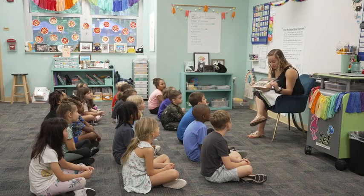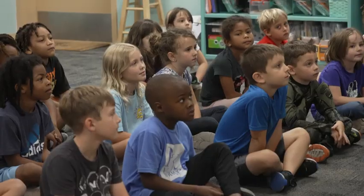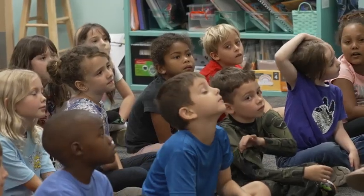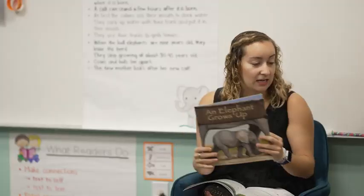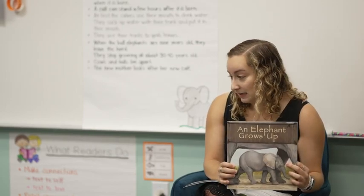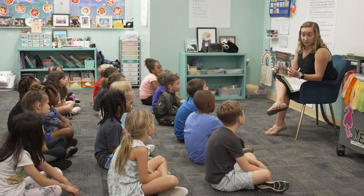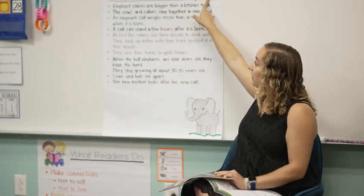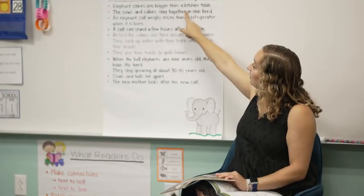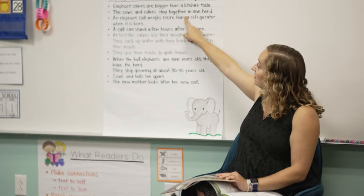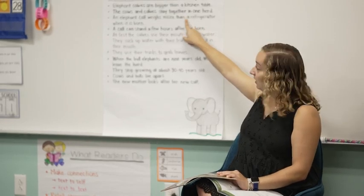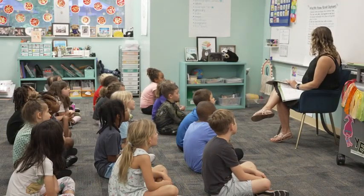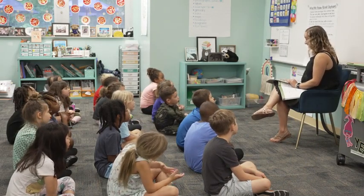Yesterday we read our book 'An Elephant Grows Up' and talked about what we knew about elephants from our learning and our new text feature — a text box. Remember, the text box gave us more information. We also made a list of everything we learned. Here's our list: elephant calves are bigger than a kitchen table, the cows and calves stay together in one herd, an elephant calf weighs more than a refrigerator, cows and bulls live apart, and the new mother looks after her new calf.